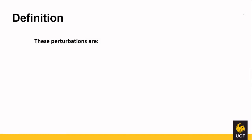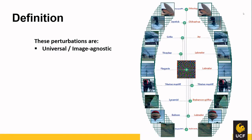Let's see the definition of universal perturbations. These perturbations are universal, meaning they are image agnostic. In this image, the original images are on the left, the universal perturbation is in the center, and the perturbed images are on the right. After adding this universal perturbation to all images, the labels change — previously a flagpole is now predicted to be a labrador. The other key point is that these perturbations are quasi-imperceptible: the perturbations are not very visible to the human eye.